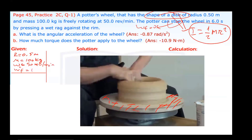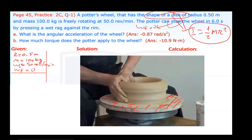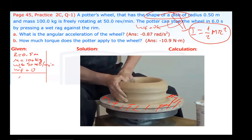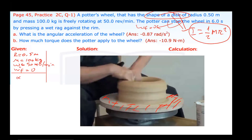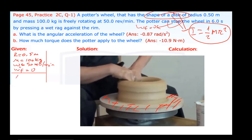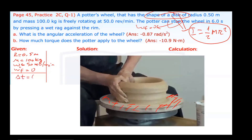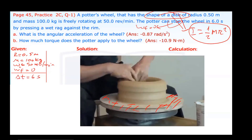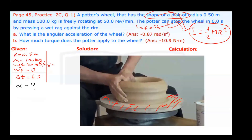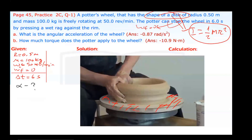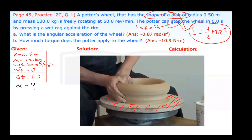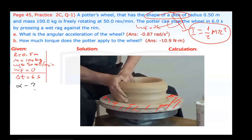Final angular speed is zero. What is the angular acceleration of the wheel? We will calculate angular acceleration first, since time is given — the wheel stops in 6 seconds, delta T equals 6 seconds. The questions are: calculate the angular acceleration of the wheel, and also how much torque does the potter apply to the wheel?